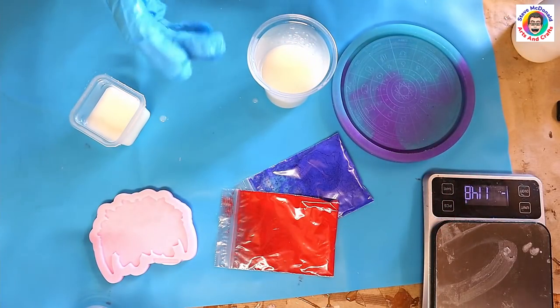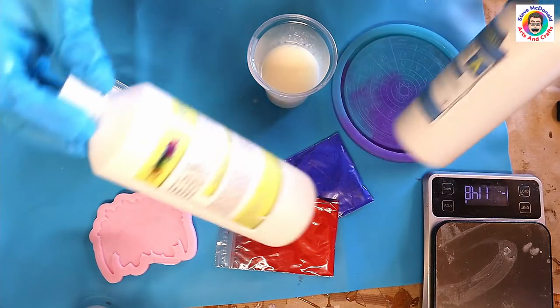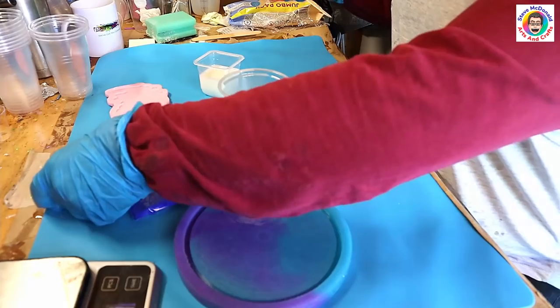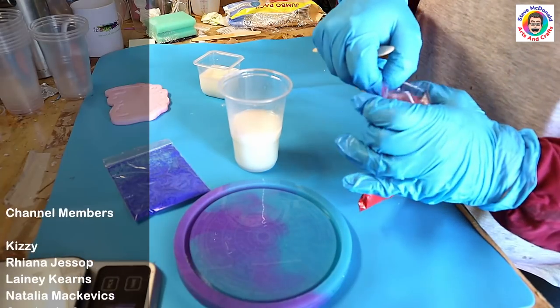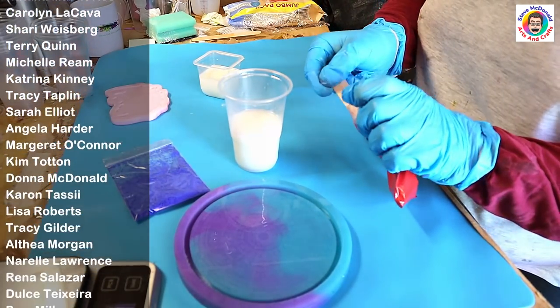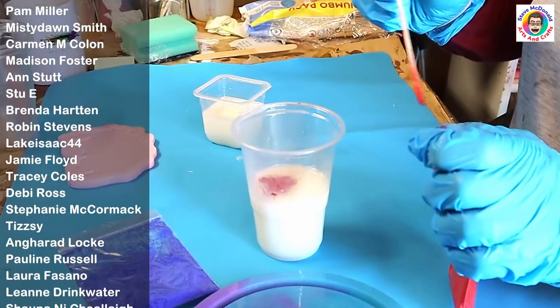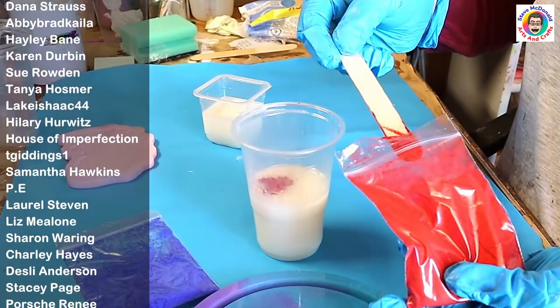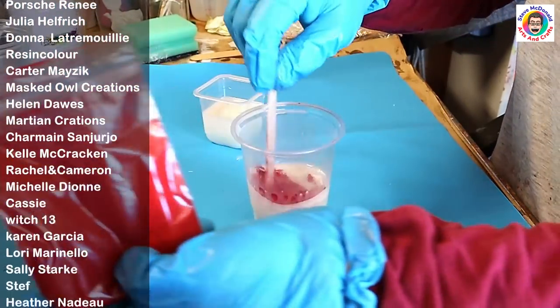So I've got my resin mixed up now and I'm using a polyurethane resin by Resin Color. That isn't available in America but I'll link one very similar, and I'm really loving polyurethane resin for projects like this. I'd like to say a quick thank you to all my members whose names are coming up now, and if you'd like to become a member then check out the link in the description below.